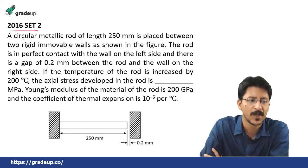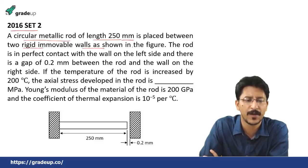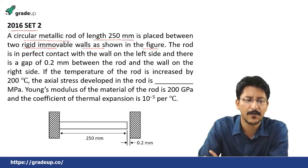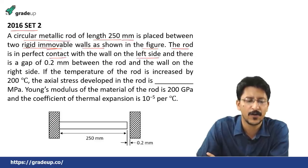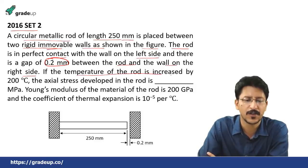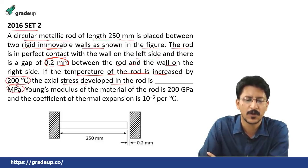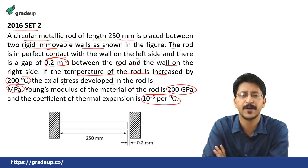GATE 2016, Set 2: A circular metallic rod of length 250 mm is placed between two rigid immovable walls. The rod is in perfect contact with the left wall and there is a gap of 0.2 mm between the rod and the right wall. If the temperature is increased by 200 degrees Celsius, the axial stress developed in the rod in megapascal is asked. Young's modulus is 200 gigapascal and the coefficient of thermal expansion is 10 to the power minus 5 per degree Celsius.